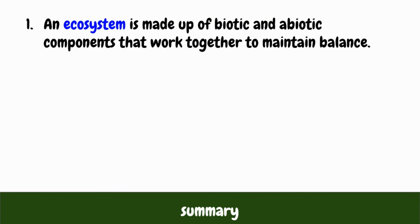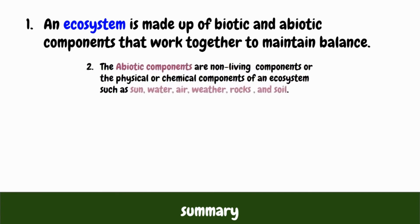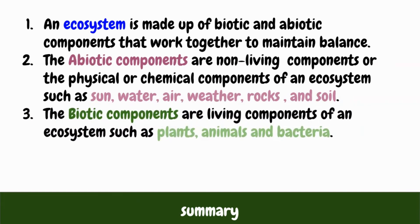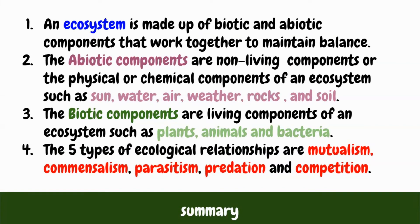Now let's summarize what we have learned today. An ecosystem is made up of abiotic and biotic components that work together to maintain balance. The abiotic component is the non-living component or the physical and chemical aspect of an ecosystem. On the other hand, the biotic component is the living component of an ecosystem. This includes all living organisms that are dependent on each other, meaning each living organism has a relationship to other living organisms. The five types of ecological relationships are mutualism, commensalism, parasitism, predation, and competition.